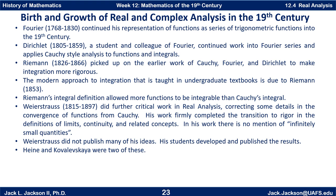Weierstrass, from 1815 to 1897, did further critical work in real analysis, correcting some details in the convergence of functions from Cauchy, and his work firmly completed the transition to rigor in the definition of limits, continuity, and related concepts. In his work there is no mention of infinitely small quantities; everything is now based firmly on the limit foundation. Unfortunately, Weierstrass did not publish many of his ideas, but his students developed and published the results — Heine and Kovalevskaya were two of these students who did publish some of his work.